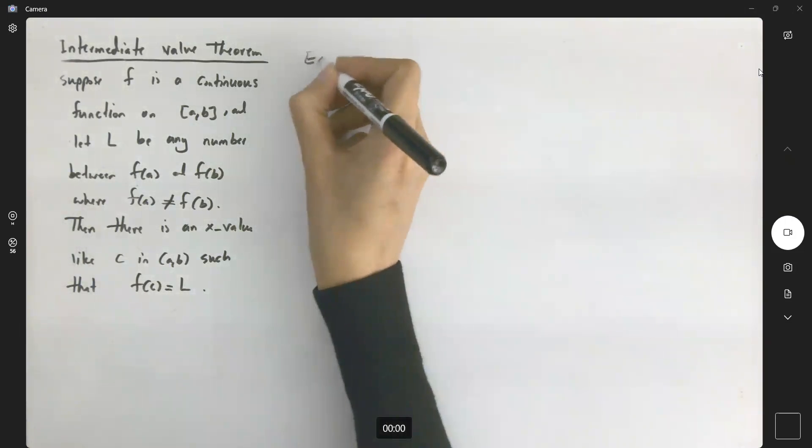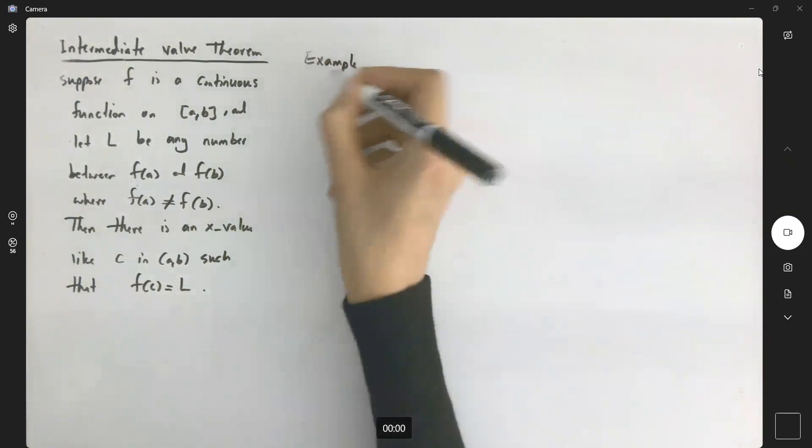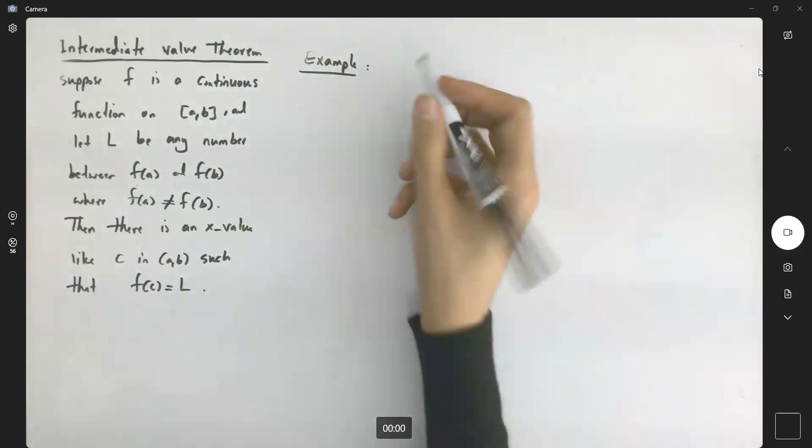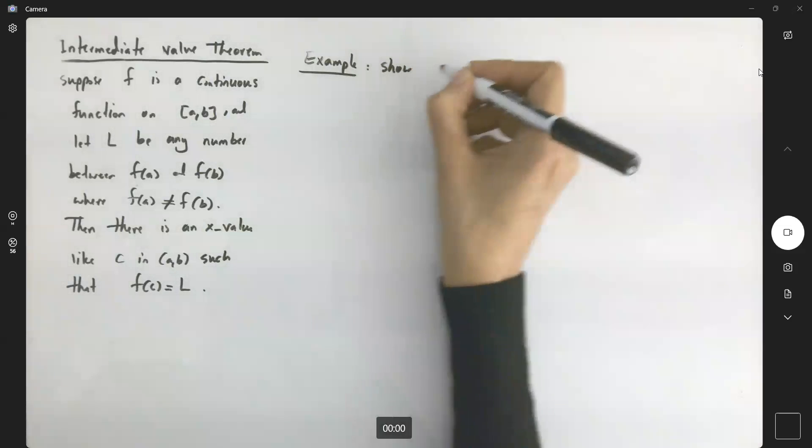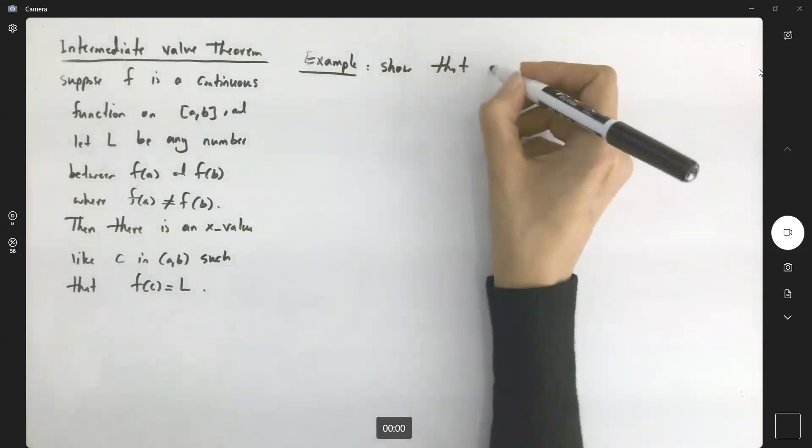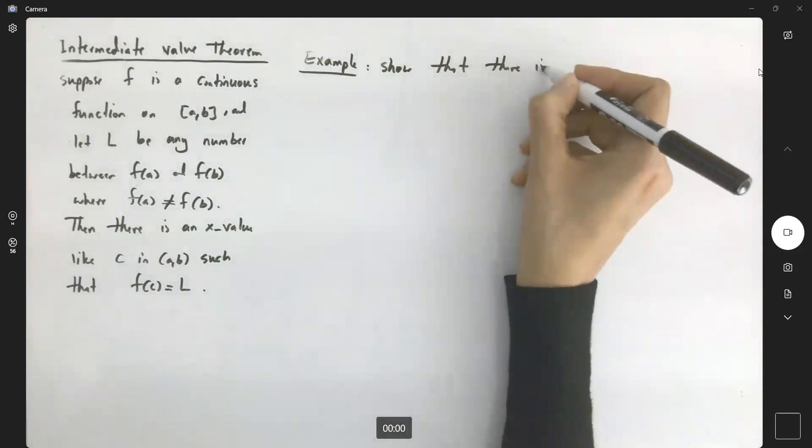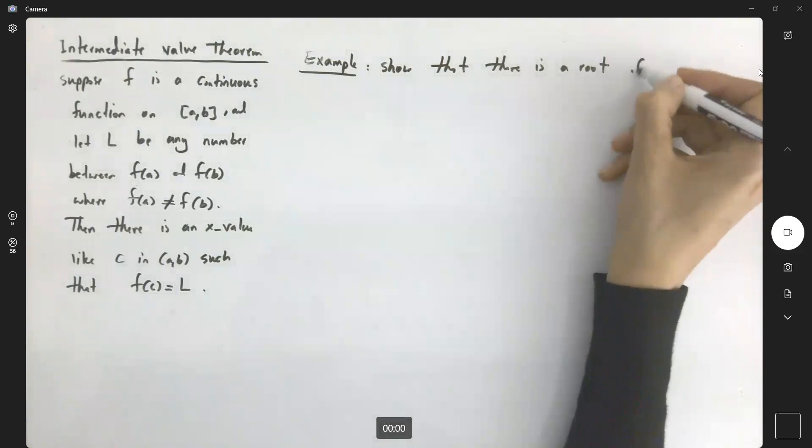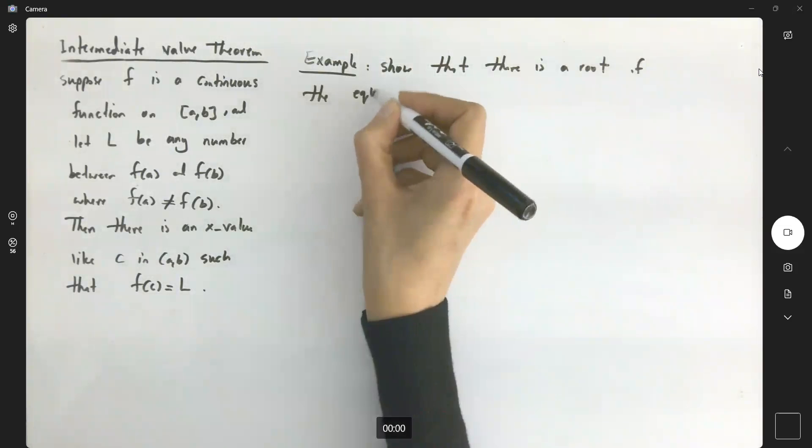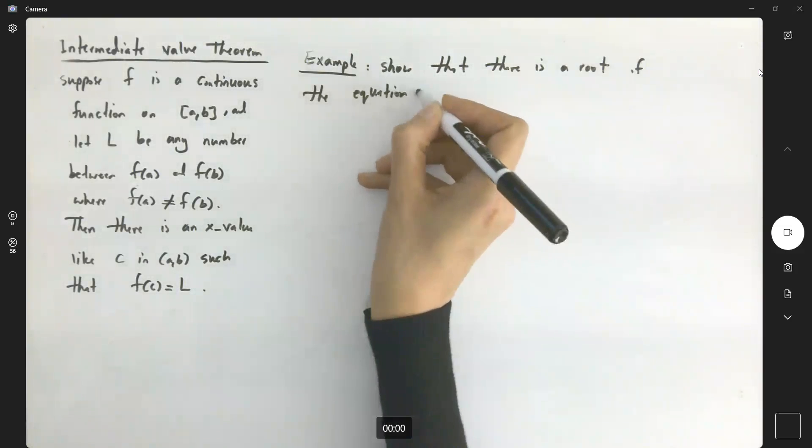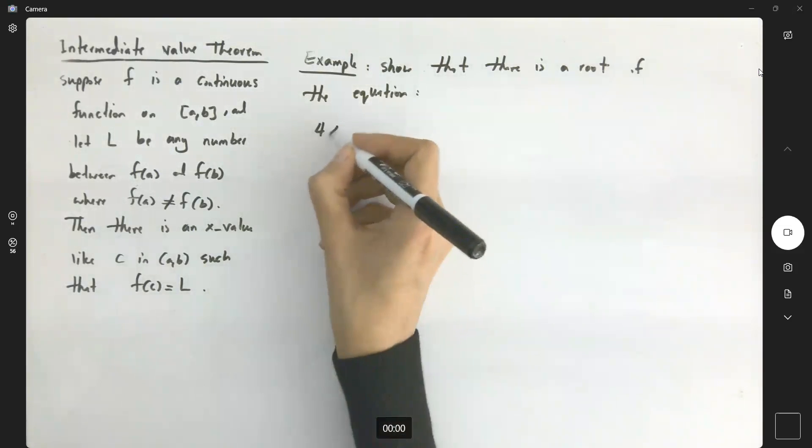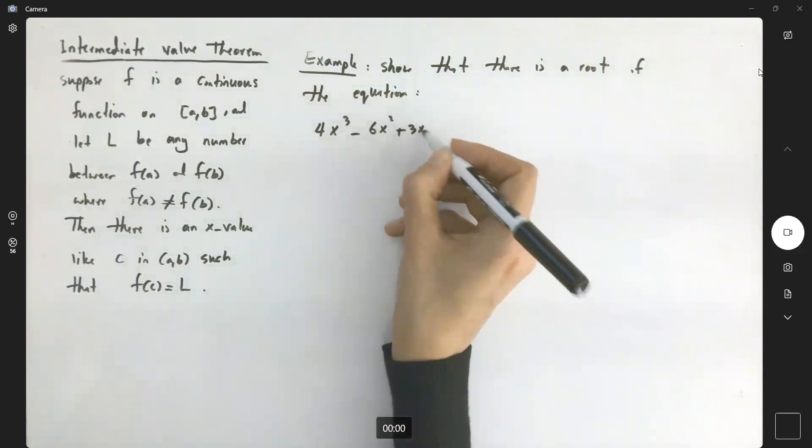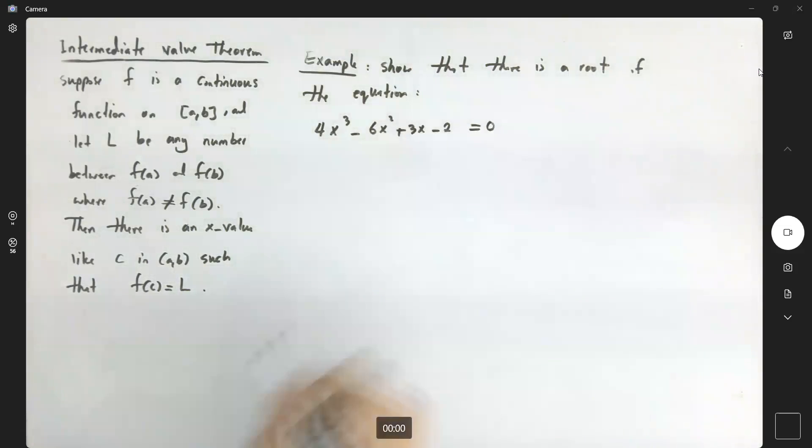Let's take a look at one example. This example says: show that there is a root of the equation 4x³ - 6x² + 3x - 2 = 0.